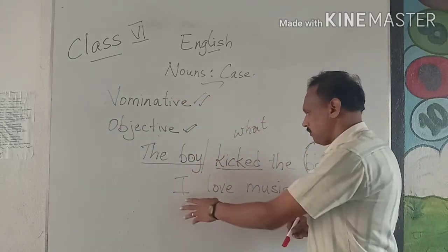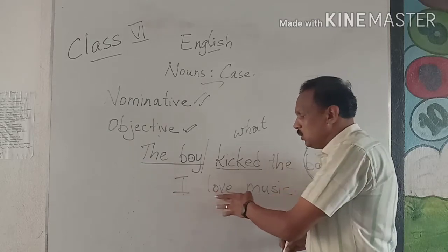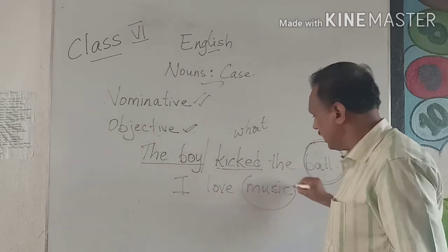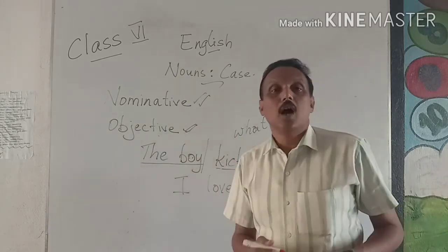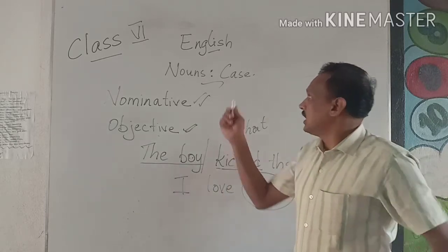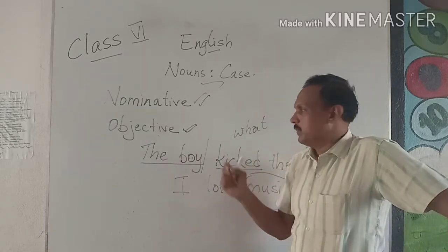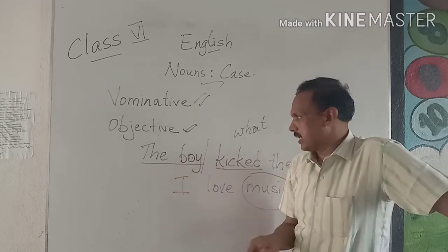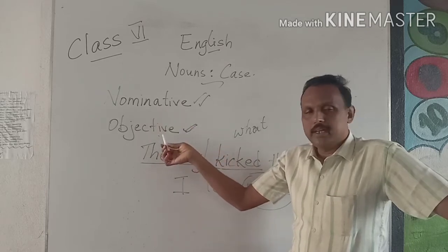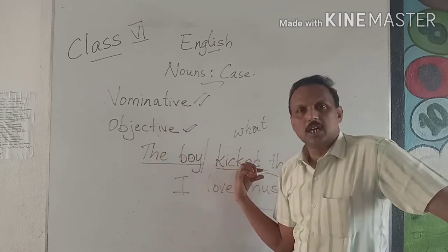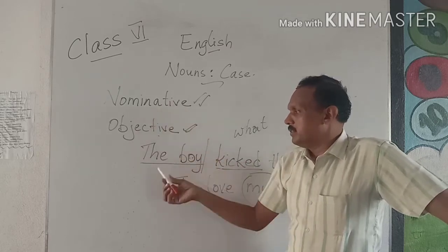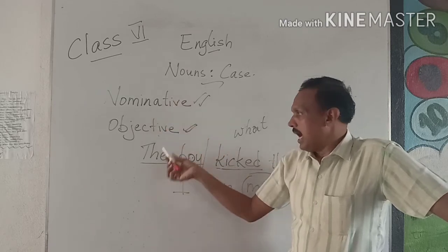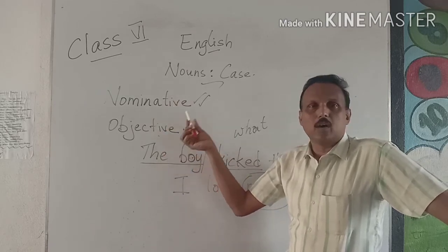The same way: 'I love music.' What do I love? Music. So music is the object here, and music comes under the objective case. To summarize: case is any word that shows it is a noun, pronoun, subject, indirect object, or direct object. There are two cases — nominative and objective. When it is the subject, we call it nominative; when it is the object, we call it objective.